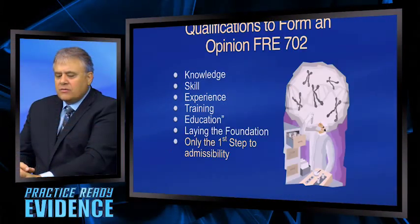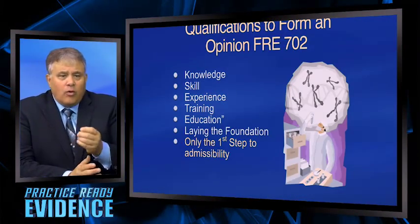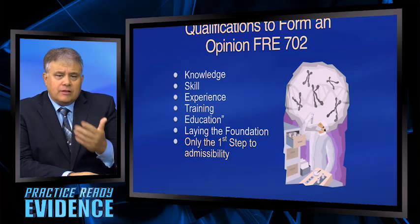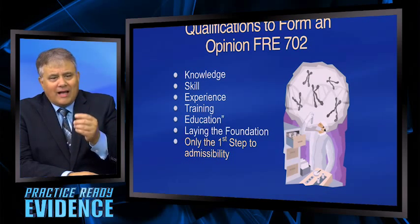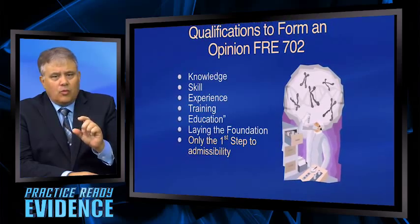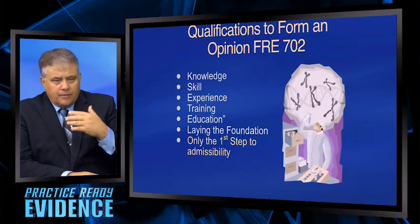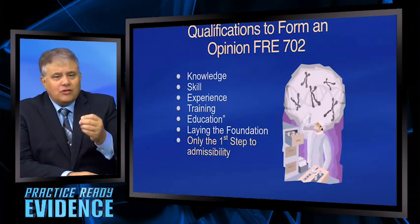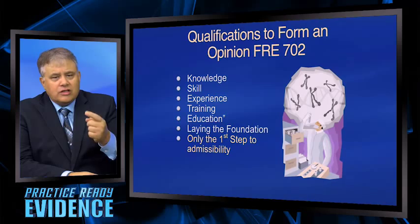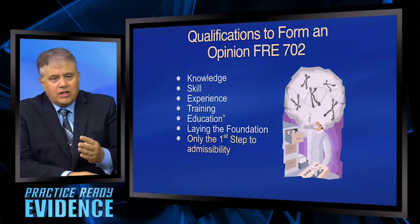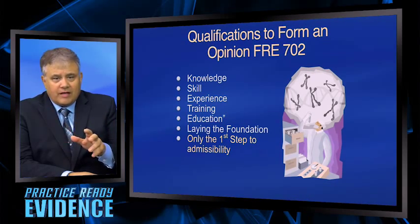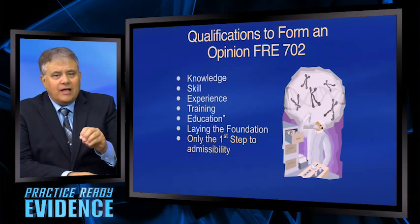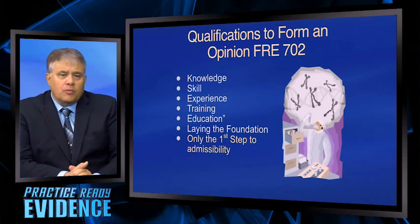The qualifications under Federal Rule of Evidence 702 — I pulled these right out of the rule. When qualifying someone to form an expert opinion under FRE 702, I have to show the court that they have the requisite knowledge, skills, experience, training, or education — some combination of those factors — to lay the foundation to get them qualified as an expert witness at trial.